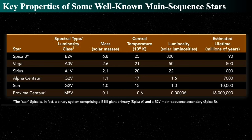Vega is about 50 times the luminosity of the sun and about 2.5 times its mass — so there's not a huge mass difference between Spica B and Vega, roughly a factor of two. Yet the lifespan is about six times longer and the luminosity ten times less. A small change in mass leads to a large change in luminosity and a huge change in lifespan.